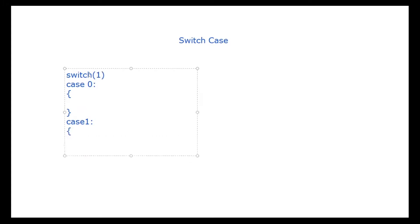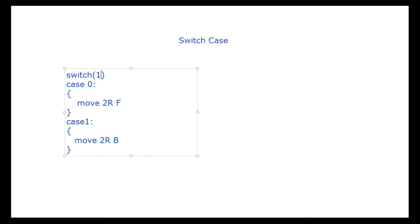If the value is one, the control goes to case one and executes the code in that block. For example, if you write 'move forward two rotations' in case one and 'move backward two rotations' in case zero, then when the value is one, it will go to case one and execute that action. This is the switch case.